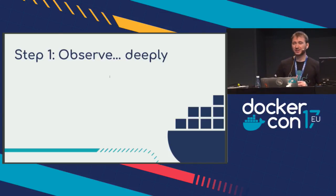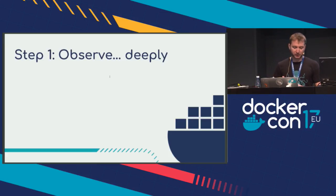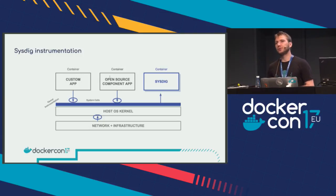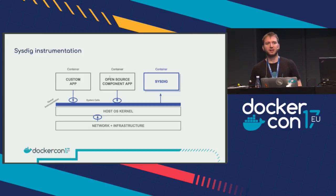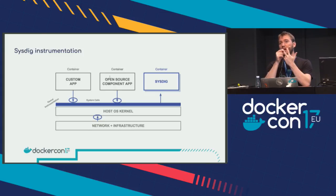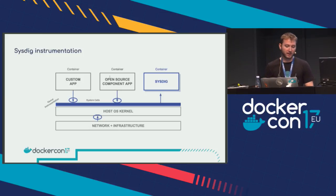There are several ways to observe your containers. One strategy — the one we adopted at Sysdig in our open source tools — is looking at things from the system call point of view. System calls will be used also by your malicious process: a malicious program will at some point write a malicious file, do malicious network activity, or run a malicious process. All of these show up at the system call API level.